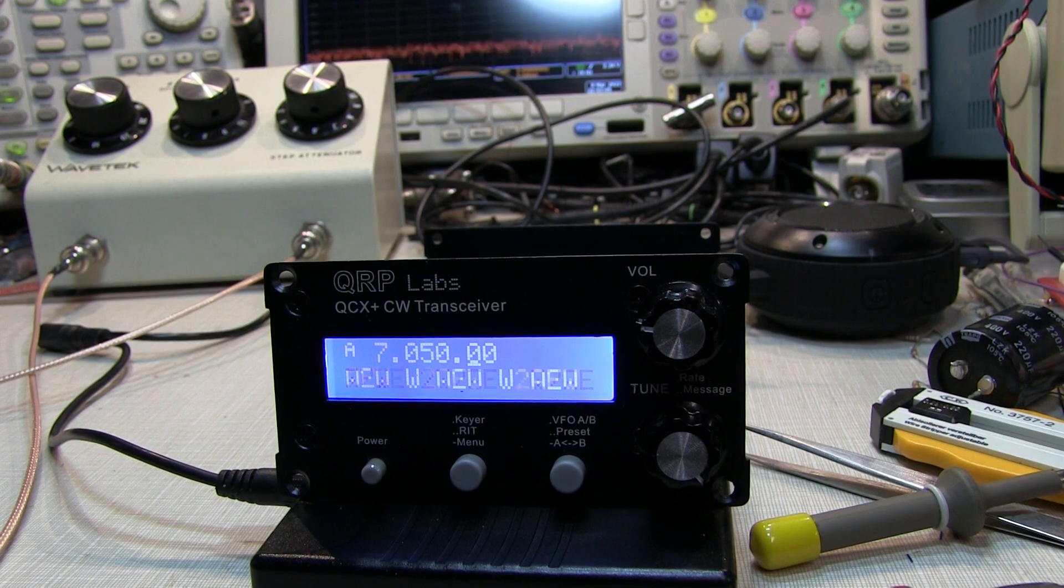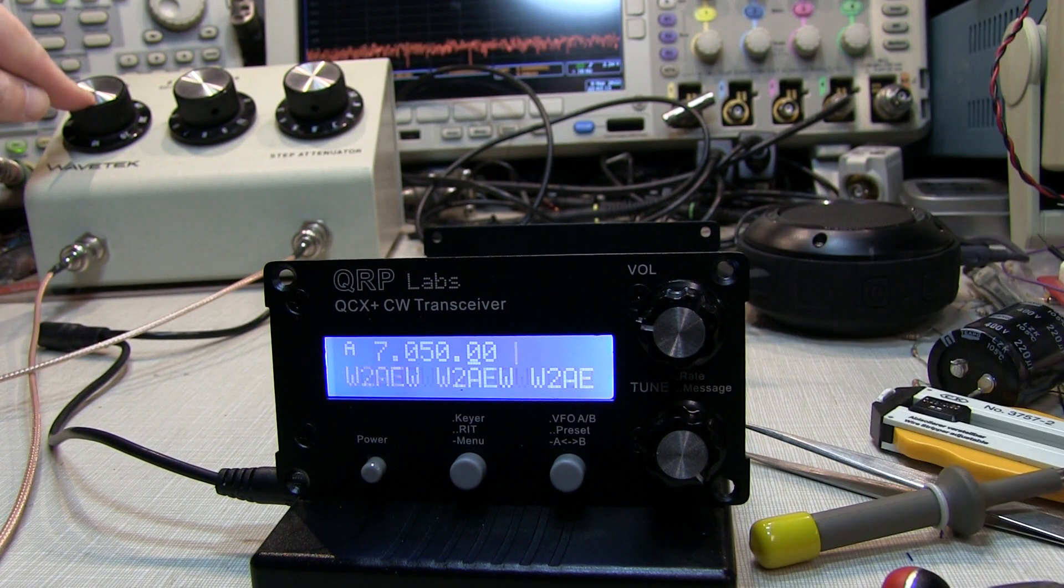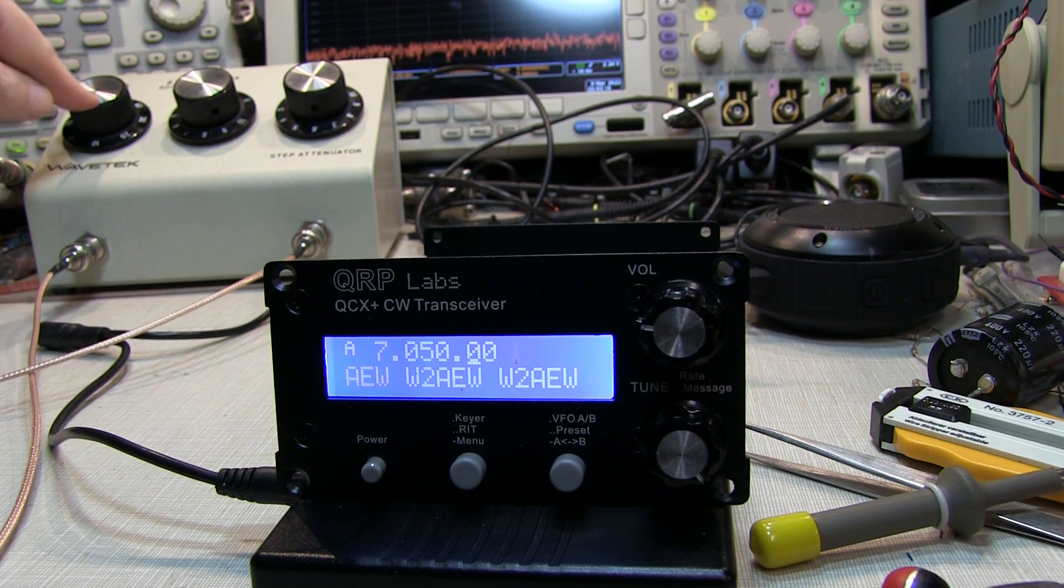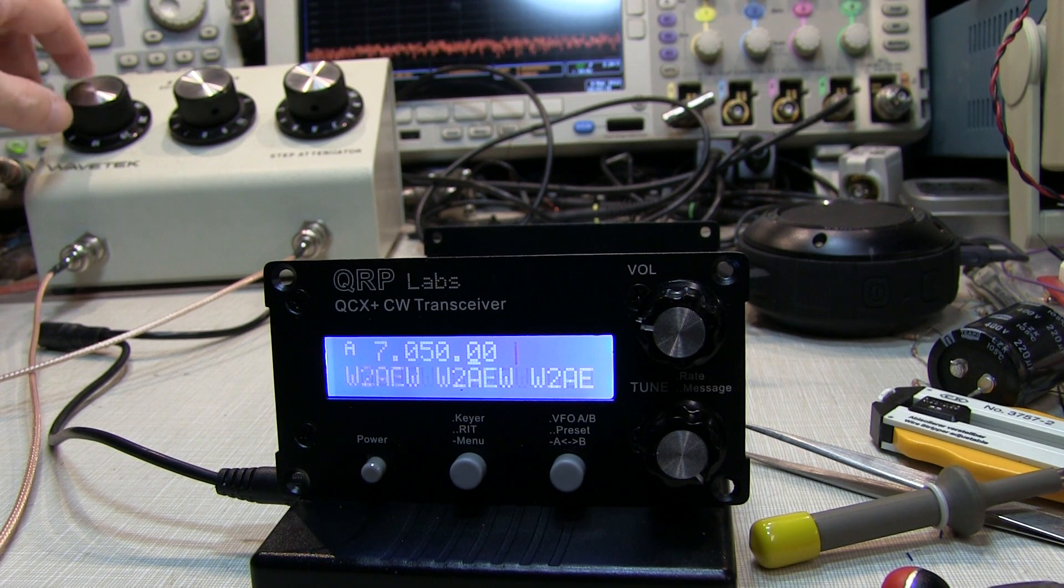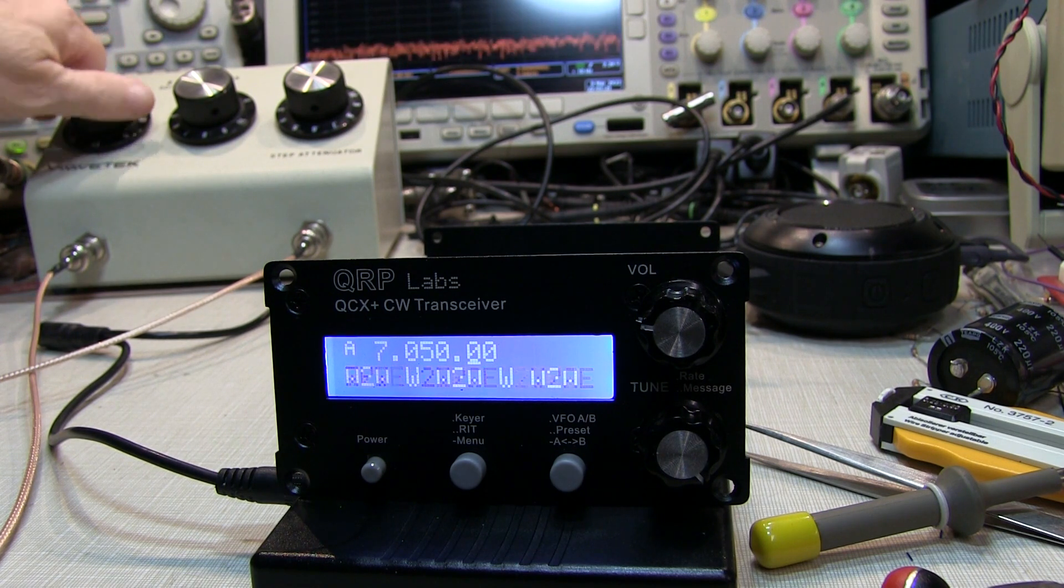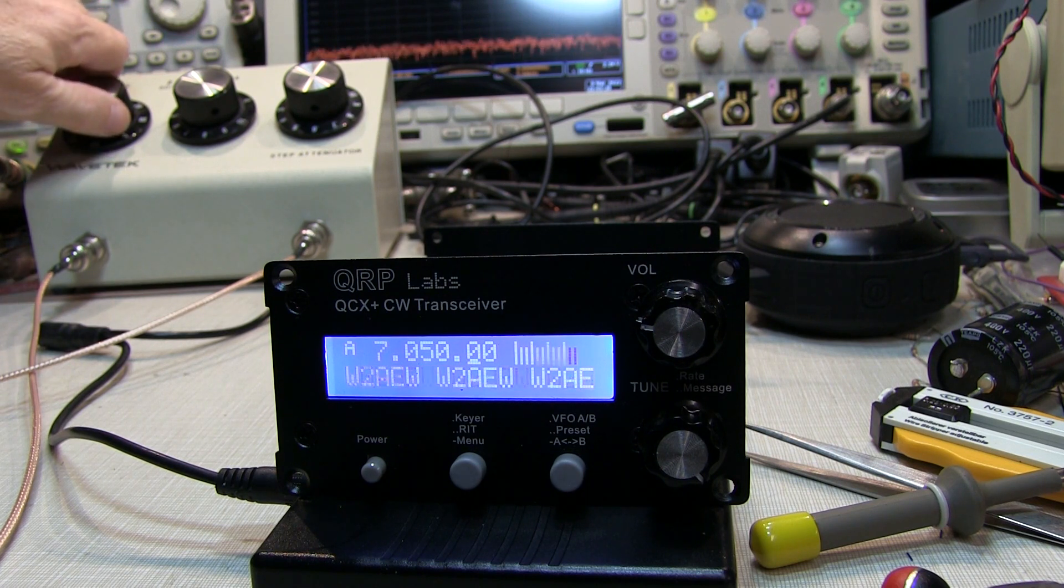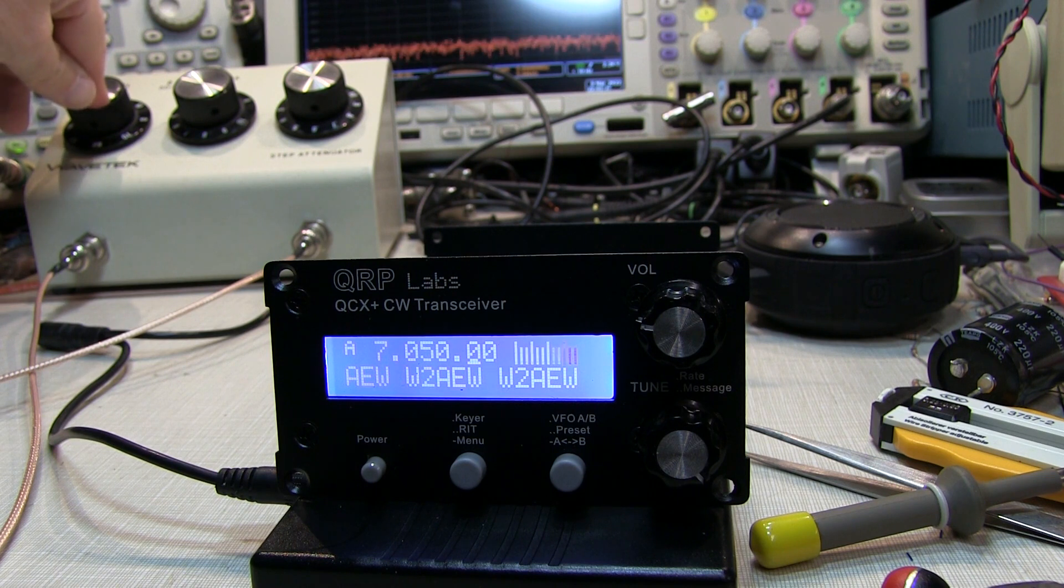Okay, played around with the adjustment a little bit here. So here I've got the volume set to about where I would probably normally have it. And this signal, again, is about 30 dB below S9. And there's 20 dB below S9. 10 dB below S9. S9 signal. About the same as the other one.